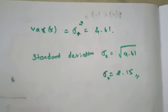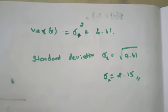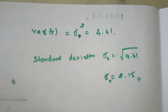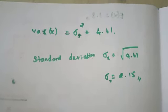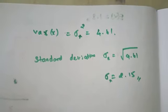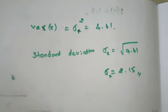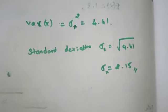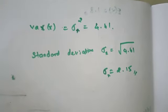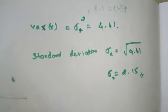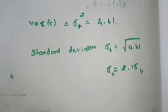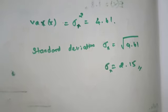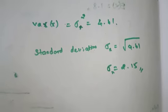This is a discrete pattern, which is a finite pattern. If we look at the continuous function, it will be a continuous function, and we will see the variance of x in that case as well.